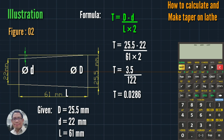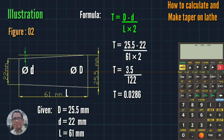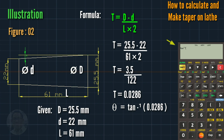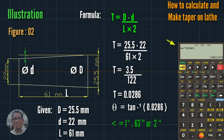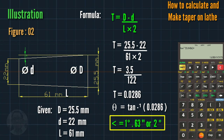Then theta equals inverse tangent of 0.0286. The angle is 1 degree and 63 seconds. Since 60 seconds equals 1 minute, that converts to 2 degrees. So we set 2 degrees on the machine.